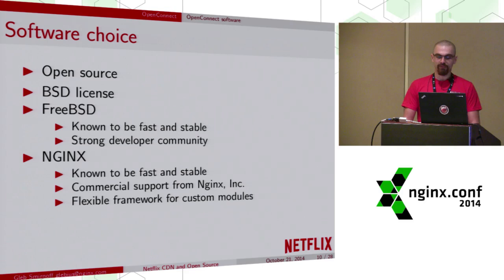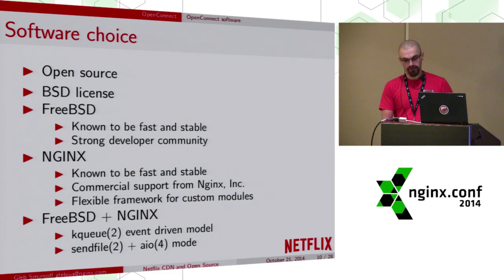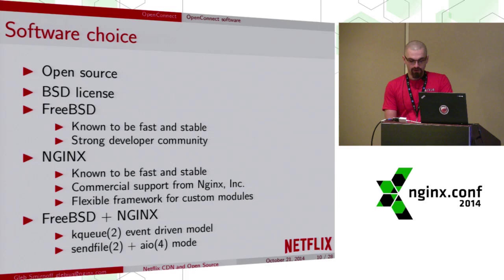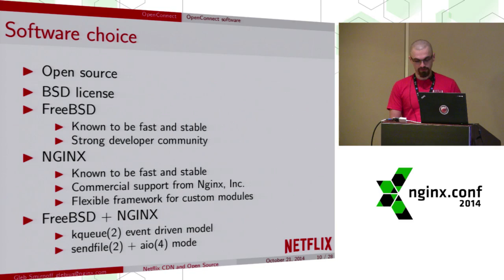What is also very important for network video streaming is the flexible framework for custom modules, because we have a couple of modules specific to video streaming. Another key point is how Nginx and FreeBSD cooperate together. When running on FreeBSD, Nginx is driven by the BSD-specific advanced KQueue event notification system — one of the best APIs to multiplex I/O. Also, out of the box without extra effort, Nginx and FreeBSD use a special trick of combining the sendfile system call with the asynchronous read system call, which prevents sendfile from blocking on disk I/O, resulting in outstanding performance.